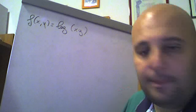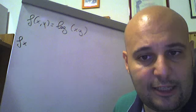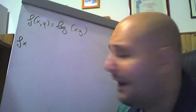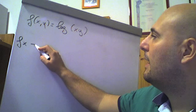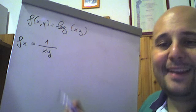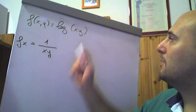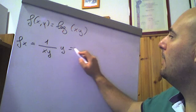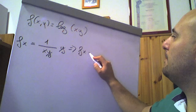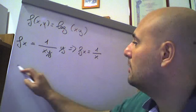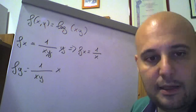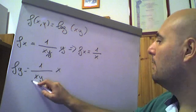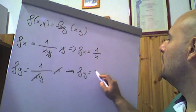Andiamo a derivare parzialmente. La derivata da fare è sempre la derivata del logaritmo di f, che è 1/f per f'. Rispetto alla x: 1/f è 1/(xy), y è una costante e sta fuori, derivata di x è 1, per y. Quindi la derivata parziale della f fatta rispetto ad x è 1/x. Così come se derivo parzialmente rispetto ad y avrò 1/(xy) per x, perché x sta fuori, derivata di y è 1, quindi la derivata parziale della f rispetto ad y è 1/y.